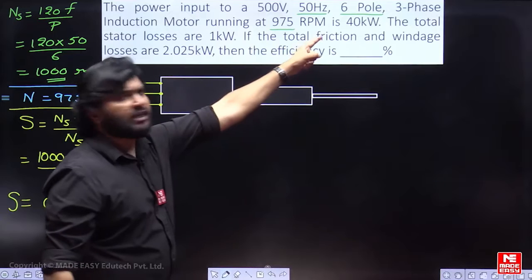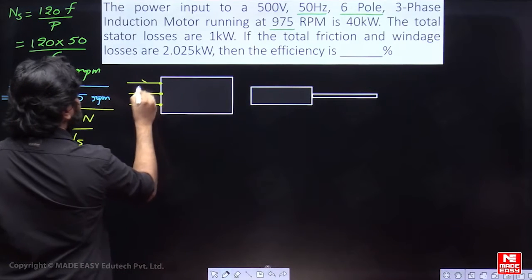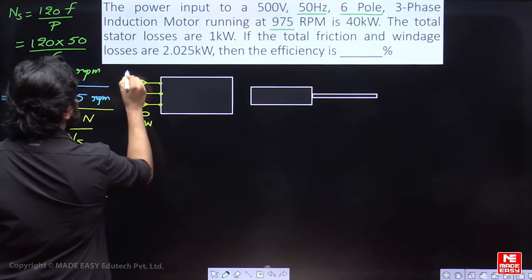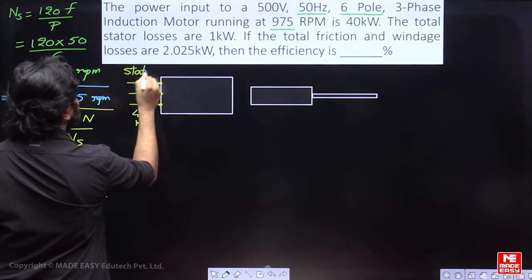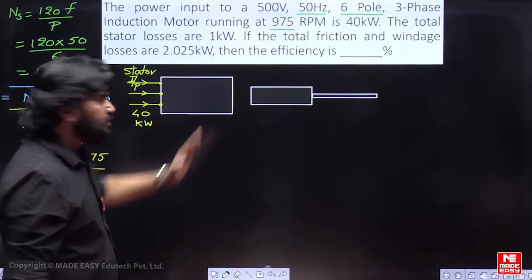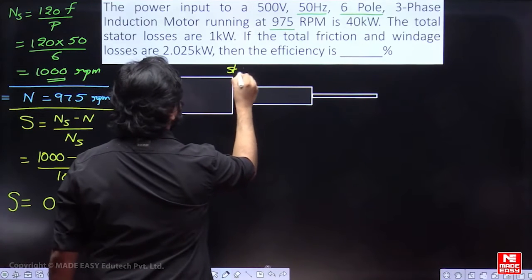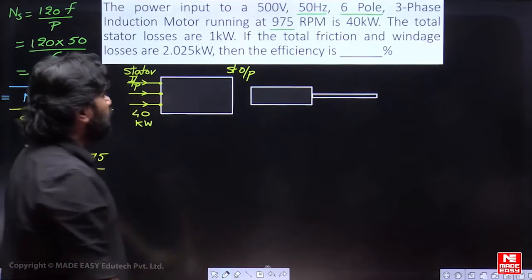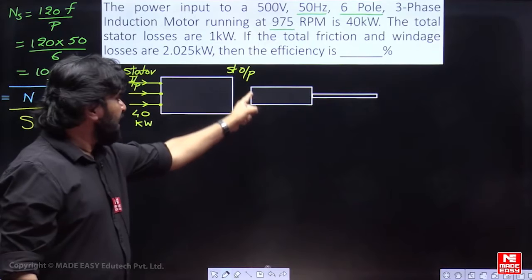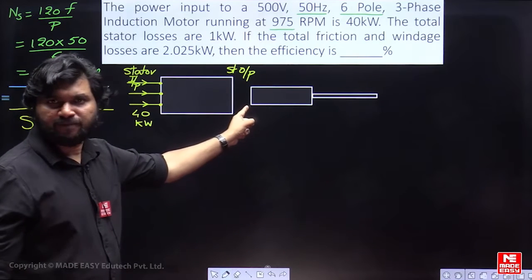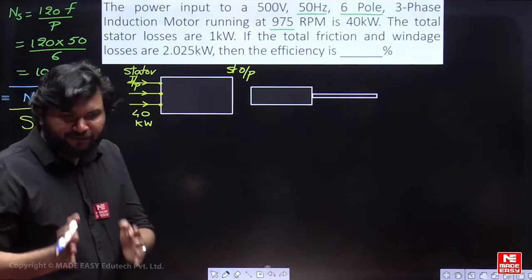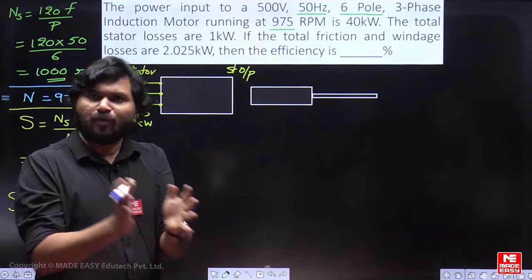Now, it is mentioned 40 kilowatt is input to stator. Stator output is equal to rotor input, also called as air gap power because air gap don't contain any losses. When flux, generally the output of stator is basically RMF rotating magnetic field. The power from stator to rotor is transferring through magnetic field.